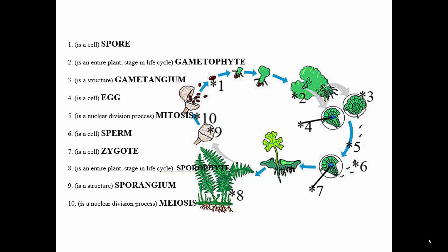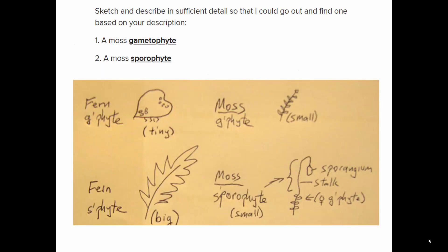So what do the gametophytes and sporophytes look like in some of these iconic plants? A moss gametophyte is a small stemmed leafy plant — it's what you'd normally point to and say 'there's a moss.' It's small stems with small leaves, green, typically about an inch or two high. That's the persistent perennial part. The sporophyte consists of a stalk with a single sporangium attached to the female gametophyte — it looks like part of the plant but it's a separate stage in the life cycle.